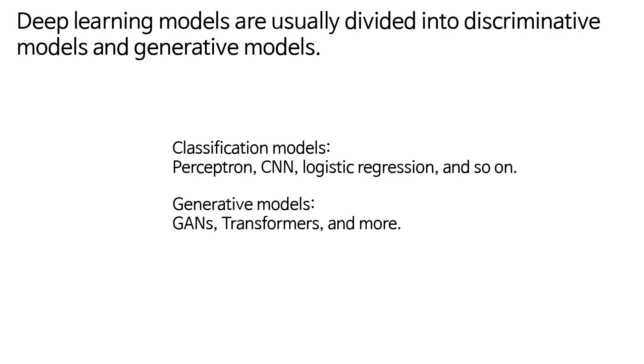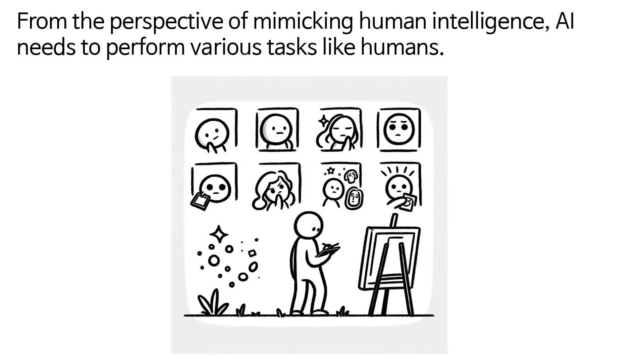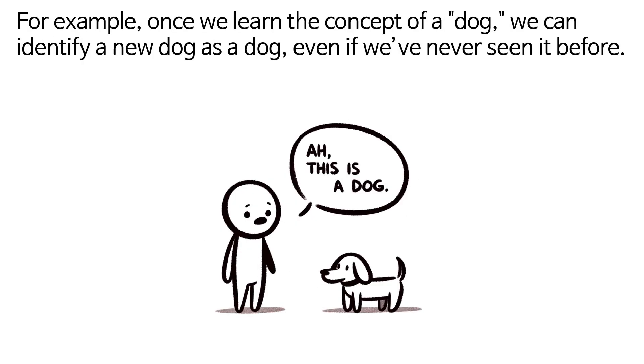Deep learning models are usually divided into discriminative models and generative models. From the perspective of mimicking human intelligence, AI needs to perform various tasks like humans.